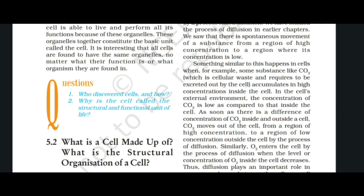Something similar happens in cells when, for example, carbon dioxide accumulates in high concentrations inside the cell. In the cell's external environment, the concentration of carbon dioxide is low compared to inside the cell. Carbon dioxide then moves out of the cell by diffusion — from a region of higher concentration to lower concentration. Similarly, oxygen enters the cell by diffusion when the concentration of oxygen inside the cell decreases.